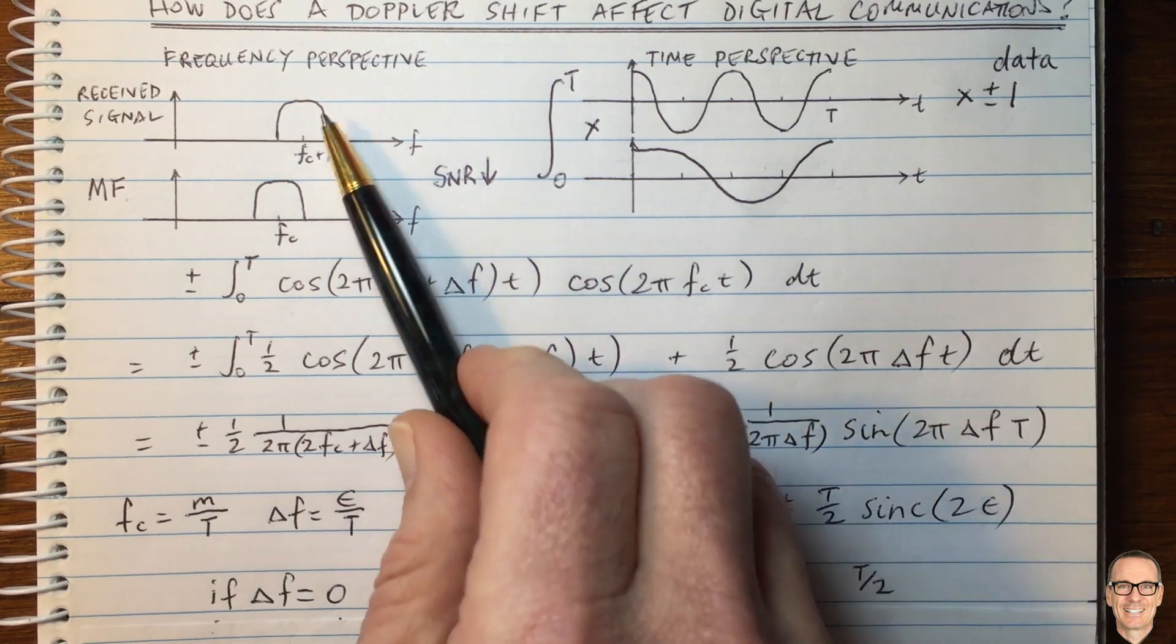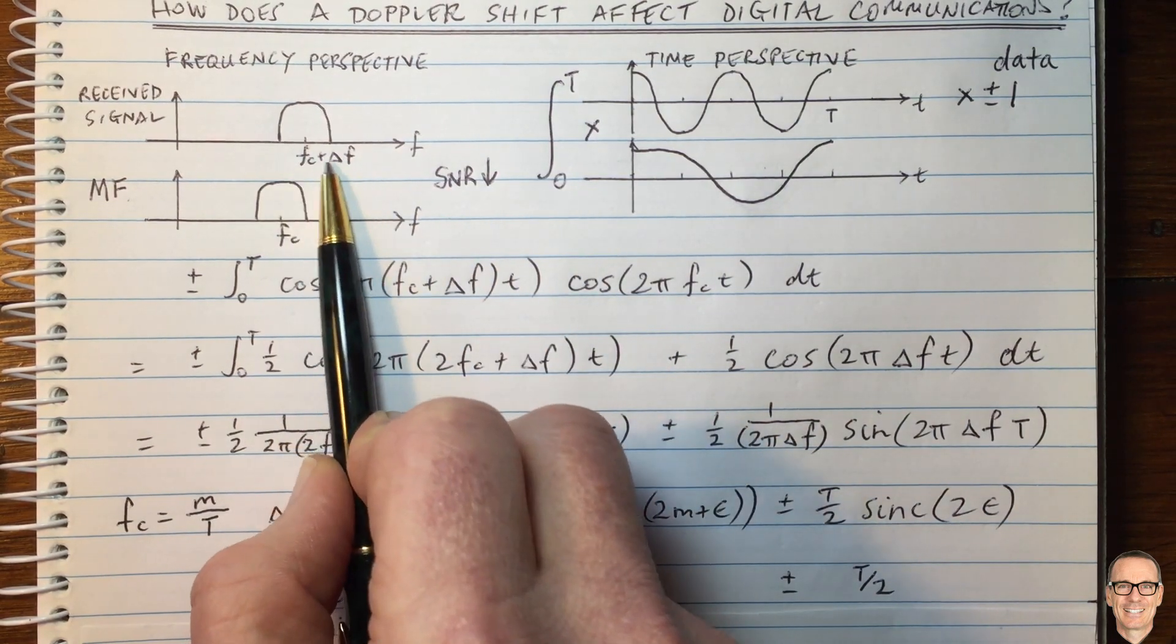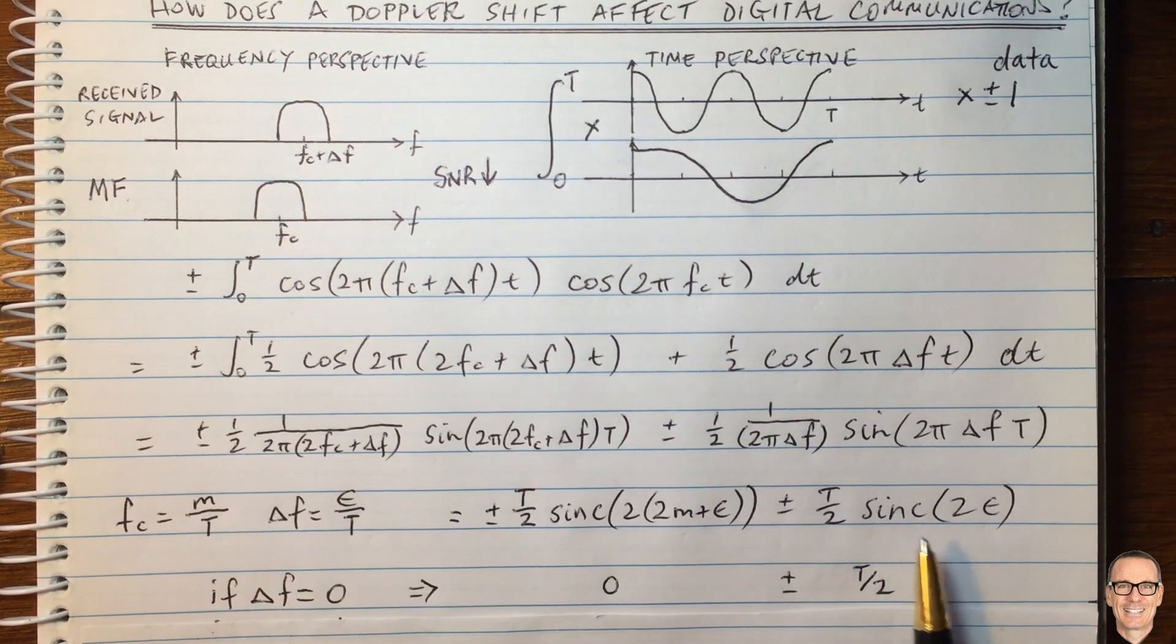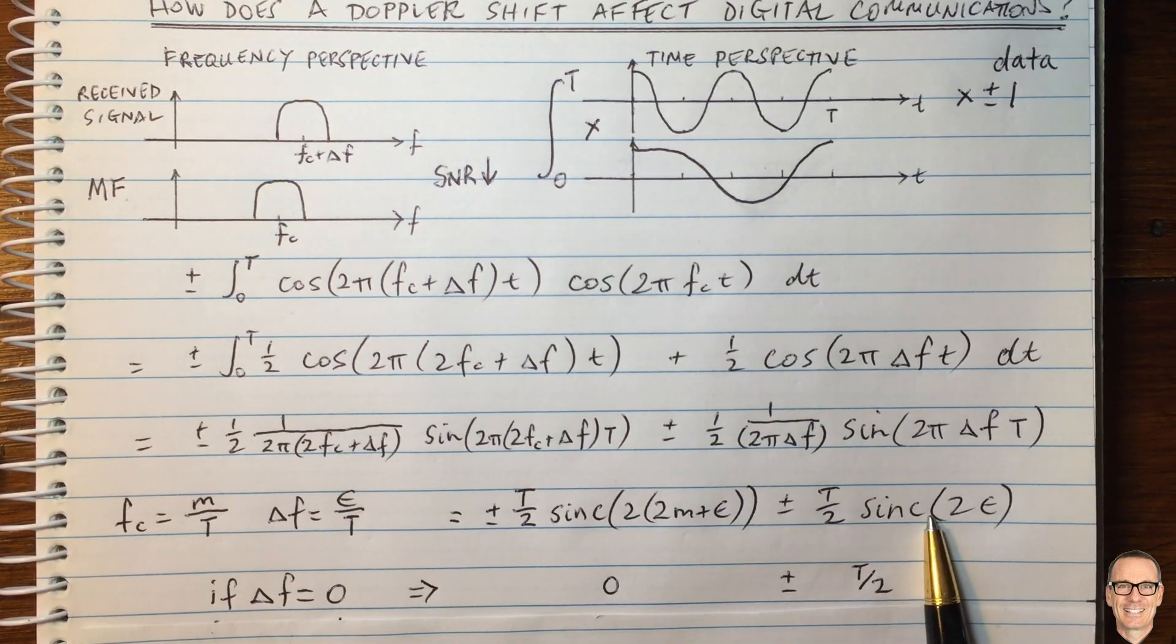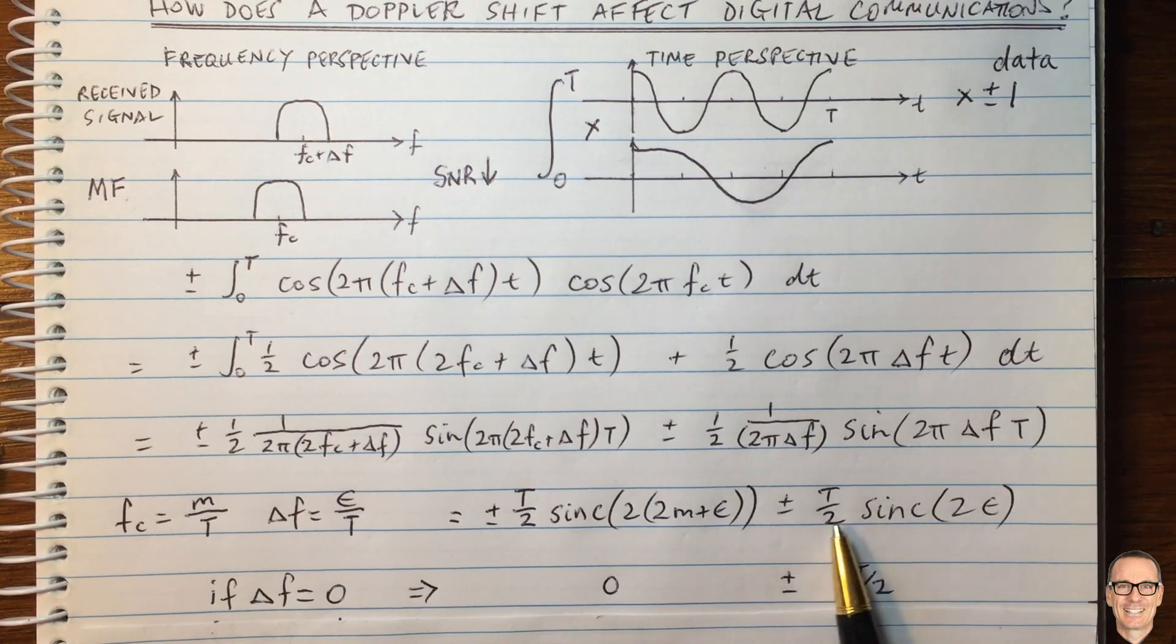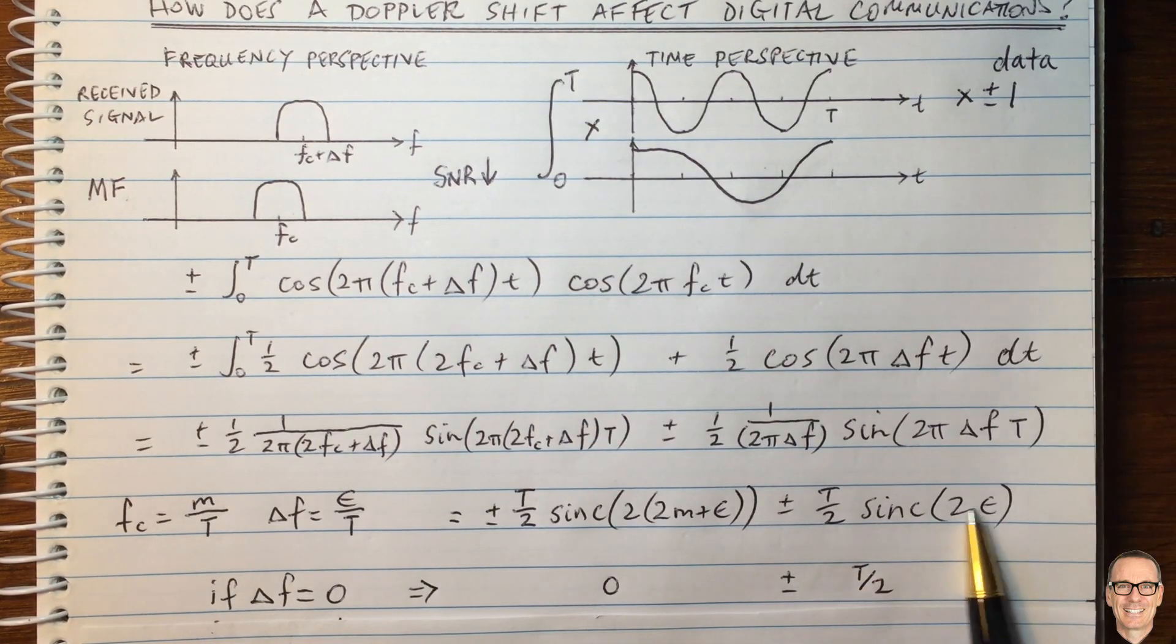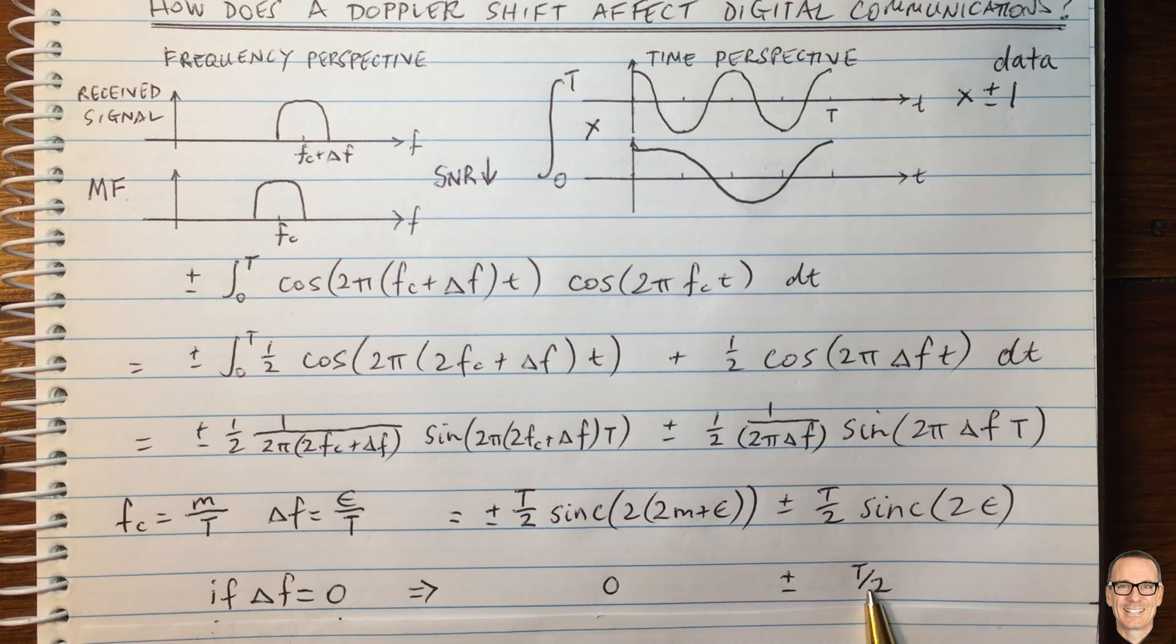Whether it's a Doppler shift positive to the right here, or a Doppler shift negative to the left. Either way, the sinc function reduces from one. So the signal to noise ratio, when you have a Doppler shift, will be lower than it was when there's no Doppler shift.